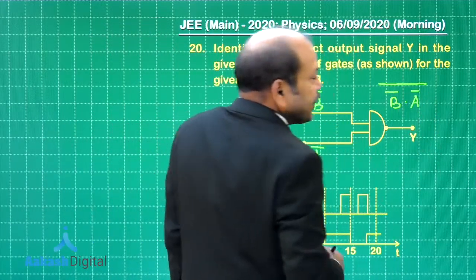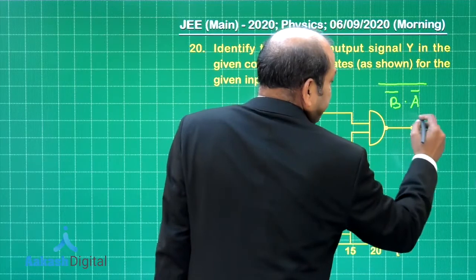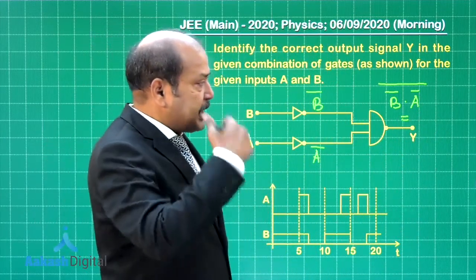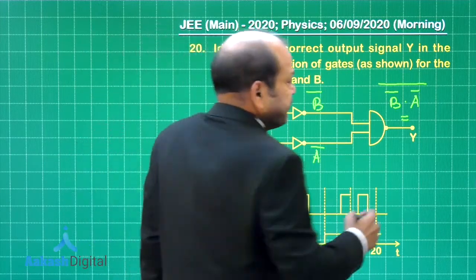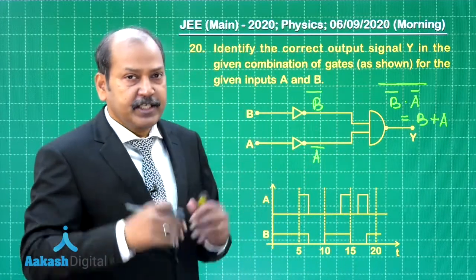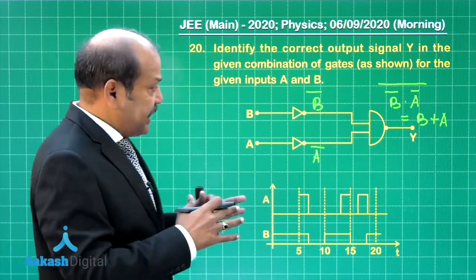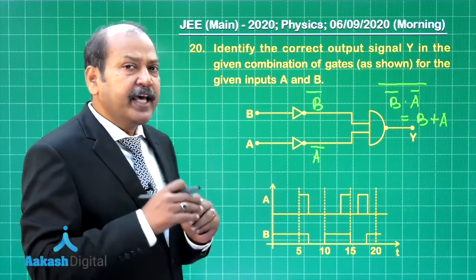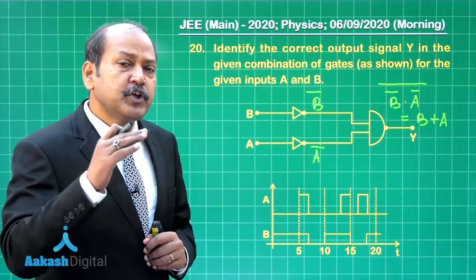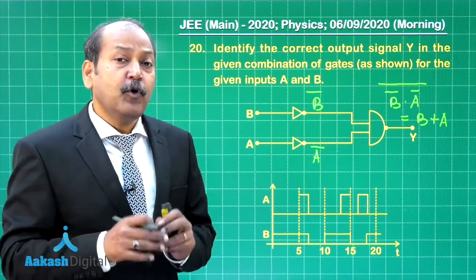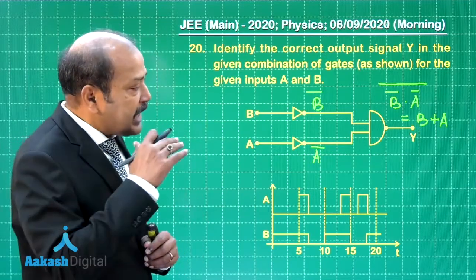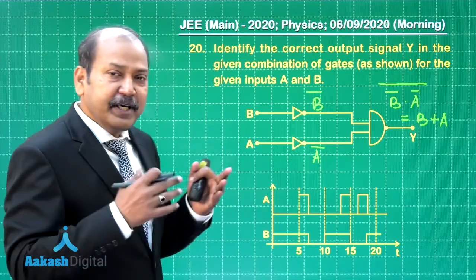If we apply de Morgan's theorem here the output Y becomes B bar bar plus A bar bar that means it becomes B plus A. So that means effectively the circuit that we have is an OR circuit which means that if any of A or B is 1 or both are 1 the output is going to be 1 and if only if both are 0 the output will be 0. So output at Y is 0 only when both A and B are 0.